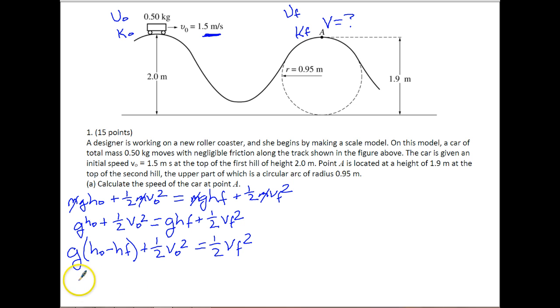So this is GHO plus one-half of VO squared. That's going to be equal to GHF plus one-half VF squared. We need to subtract GHF from the other side. So this is G, we're going to do HO minus HF because we can factor out a G, plus one-half of VO squared is equal to one-half of VF squared. Let's multiply both sides by 2. When we do that, we get 2G times HO minus HF plus VO squared is equal to VF squared. And so now we kind of have our equation that we need, and we can go through and solve so that we can find our correct answer.